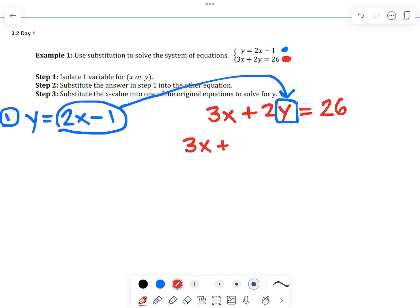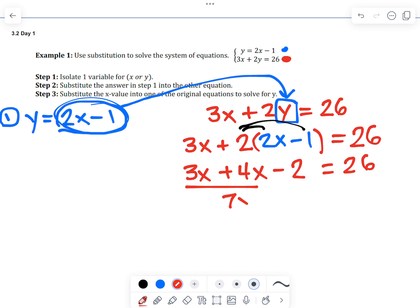3x plus 2. And now we replace that y in that parentheses. So that y right here is 2x minus 1. Now what's nice now is now we're down to not two variables in the equation, but just one. So now we go ahead and solve it. So we're going to have to distribute the 2 into the parentheses. So we're left with 4x minus 2. And then we combine like terms. 7x minus 2 equals 26.